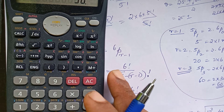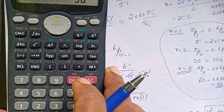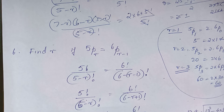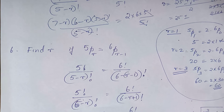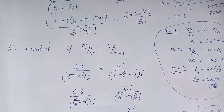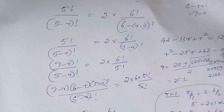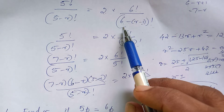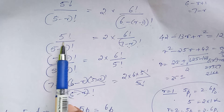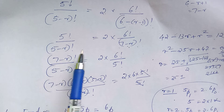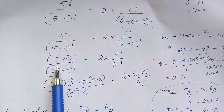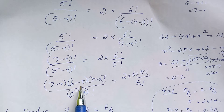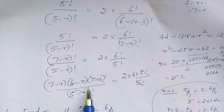Since the order of simplification matters, if we have a correction here we need to make it. So: 5 factorial by (5 minus r) factorial equals 2 into 6 factorial by (6 minus r minus 1) factorial. That gives 5 factorial by (7 minus r) factorial. Then we work with 7 minus r and 5 minus r.